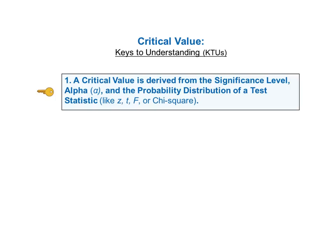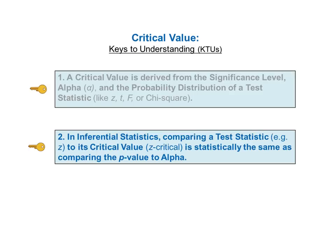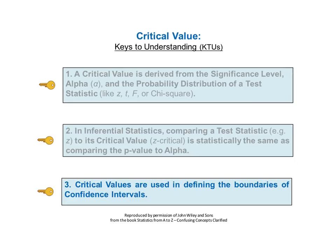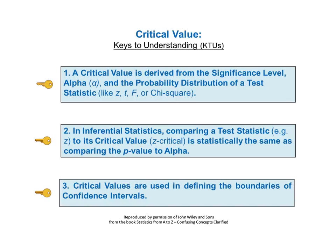The first key to understanding is: a critical value is derived from the significance level alpha and the probability distribution of a test statistic, like Z, T, F, or Chi-square. The second KTU is: in inferential statistics, comparing a test statistic — for example Z — to its critical value Z-critical, is statistically the same as comparing the p-value to alpha. The third key to understanding is: critical values are used in defining the boundaries of confidence intervals. Here on one page are the three keys to understanding the concept of critical value. You may want to pause the video at this point and read them all together.